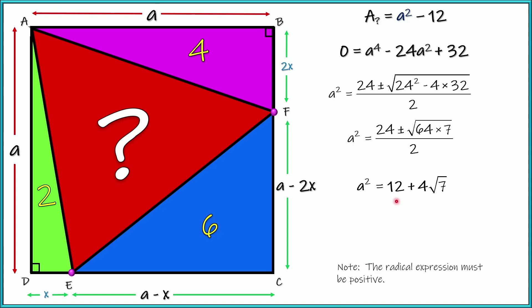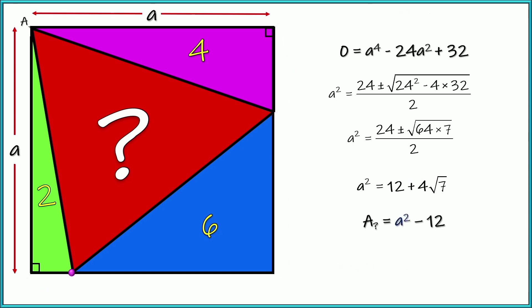And we're going to have only the positive number because we're subtracting 12 from this number right here. So this number has to be more than 12 because we're talking about an area. Right. All right. So now we know what A squared is. So we just have to plug that into our little expression we started with. A squared minus 12 is the area of the red triangle right here. So go ahead and just substitute those things in. 12 minus 12 is 0. We're left with 4 times the square root of 7.